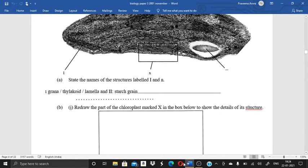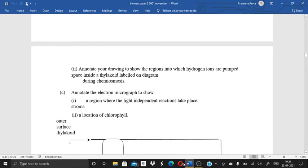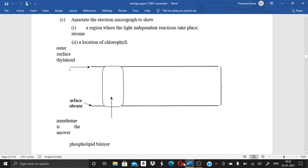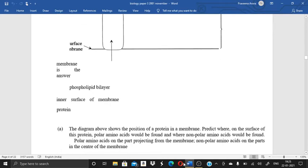Redraw the part of the chloroplast marked X in the box below to show the details of this structure. You have to draw the chloroplast over here. Then is, annotate your drawings to show the regions into which hydrogen ions are pumped, space inside a thylakoid labeled on diagram during chemiosmosis. Then next question is, annotate the electron micrograph to show a region where the light independent reaction takes place. Next question is location of chlorophyll. I have given you the answer. You can just check out later on.